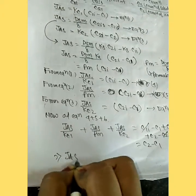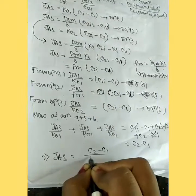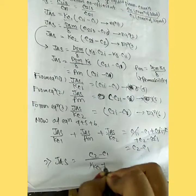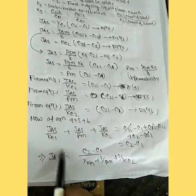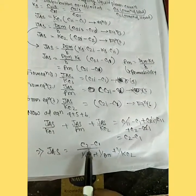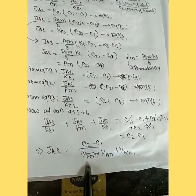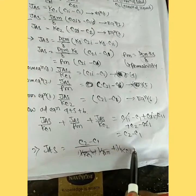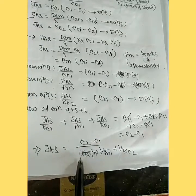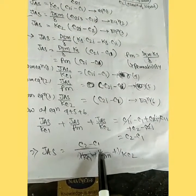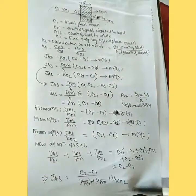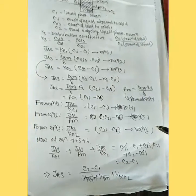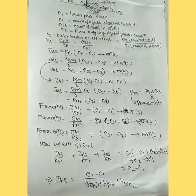So JΔs = (C2 - C1) / (1/Kc1 + 1/Pm + 1/Kc2). This is the flux derivation. Kc1 is mass transfer coefficient, Pm is permeability coefficient, Kc2 is mass transfer coefficient. 1/Kc1 is one type of resistance, 1/Pm is one type of resistance, 1/Kc2 is one type of resistance. This is the whole derivation.